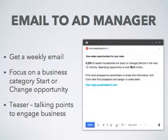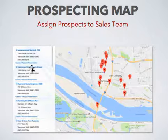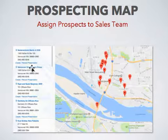So each Monday, the ad manager will get an email with a new business category each week selected by Pulse, along with the talking points — in other words, what to say. If you like, those emails can be sent directly to individual ad reps. When you click on the link in that email, it'll take you right to the map with prospects for that business category. Then all you have to do as the manager is click on a specific business within that weekly hot business category and assign it to an ad rep for a presentation.